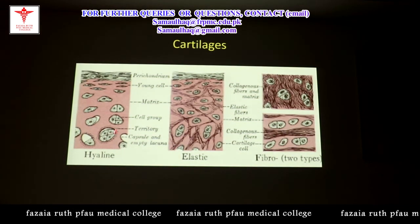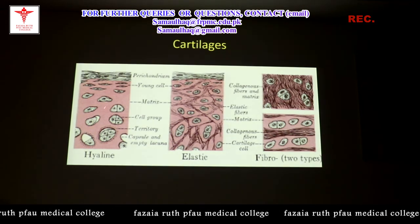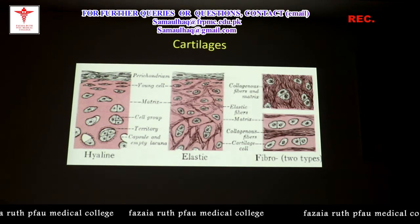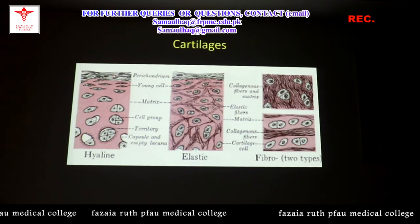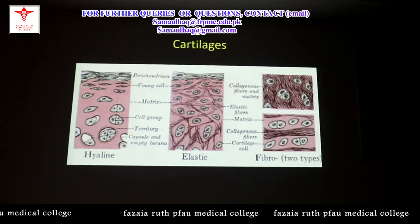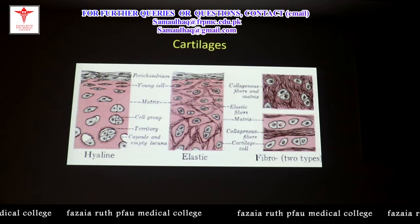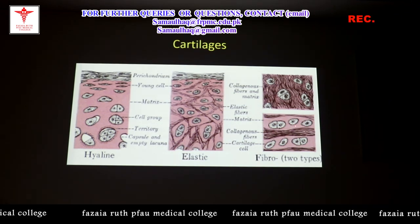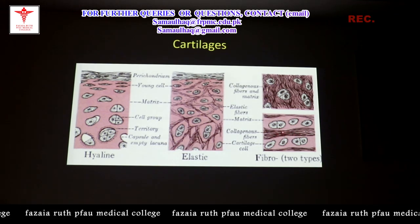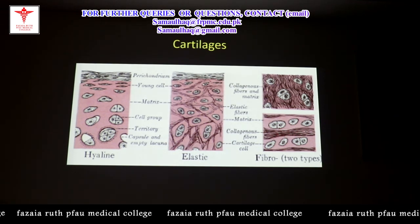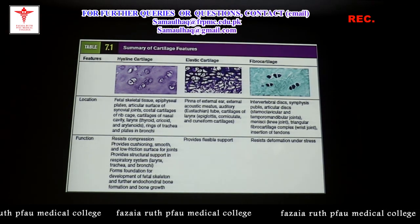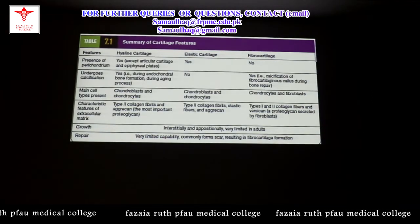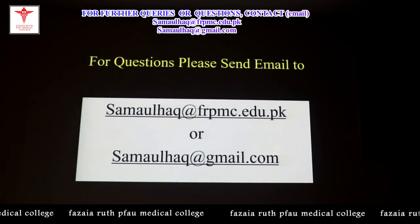In summary: hyaline cartilage has isogenous groups with homogeneous ground substance; elastic cartilage also has isogenous groups but with interlacing elastic fibers giving a heterogeneous appearance, along with perichondrium present in both hyaline and elastic; fibrocartilage has isogenous groups arranged in rows with intermingled type 1 collagen fibers giving a parallel appearance. These are the major differences between the three cartilages.